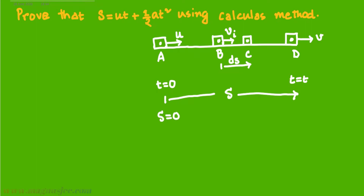At the initial point A, the displacement s was 0, and at the point D, displacement becomes s. At the point A, velocity is u — v equals u — and at the final point D, the final velocity is v.